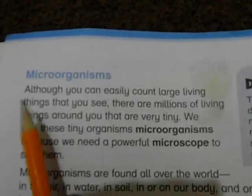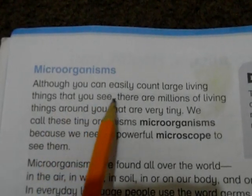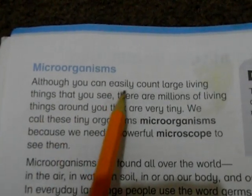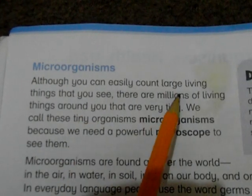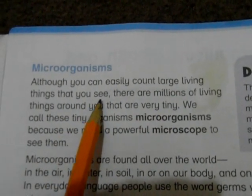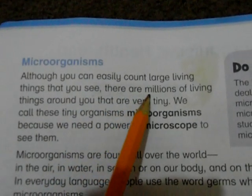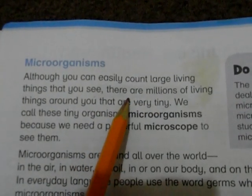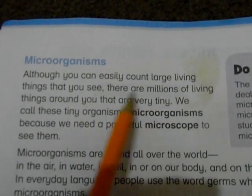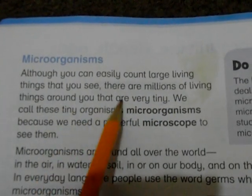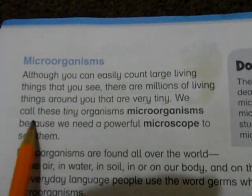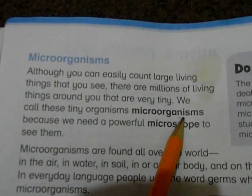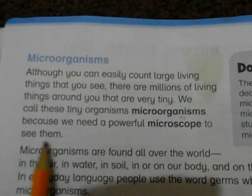Now it is page number 12: Micro-organisms. Although you can easily count large living things that you see, there are millions of living things around you that are very tiny. We call these tiny organisms micro-organisms, and we call them micro-organisms because we need a powerful microscope to see them.